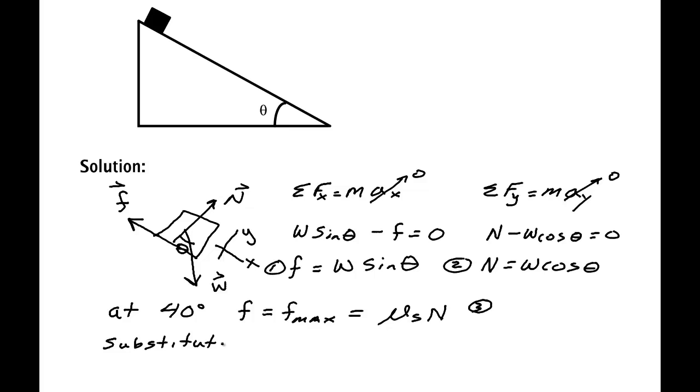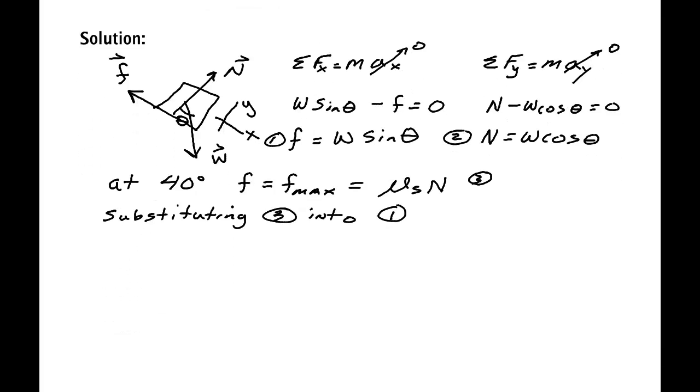So for 40 degrees we want to substitute equation three into equation one. If we do that, then we get mu_s times N equals W sine theta. We now can substitute equation two.